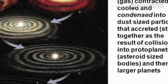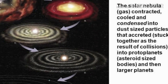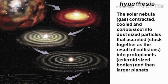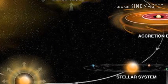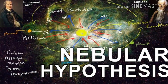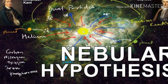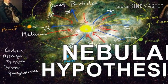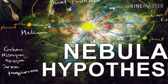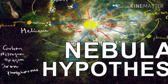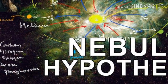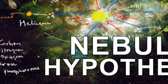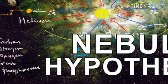Our next topic is about the nebular hypothesis. The modern nebular hypothesis states that planets originate in a dense disk formed from material in a gas-dust cloud that collapses to give us the sun. A nebula was first proposed in 1734 by Swedish scientist and theologian Emanuel Swedenborg and Emanuel Kant. The nebular hypothesis is the most widely accepted model in the field of cosmogony to explain the formation and evolution of the solar system.